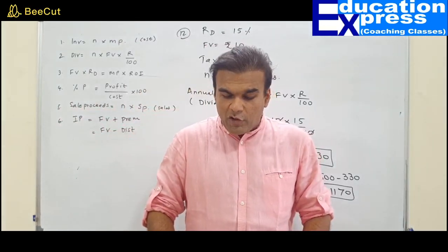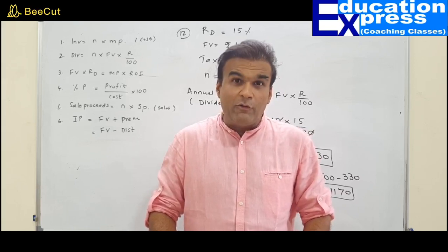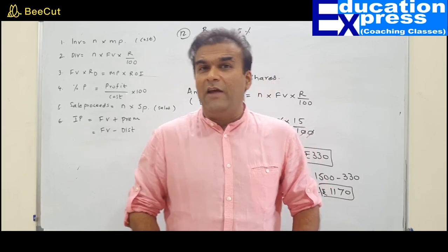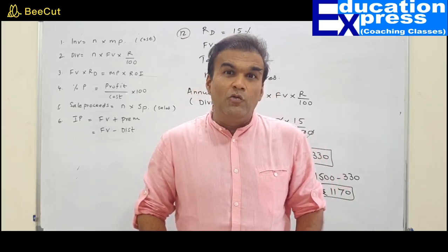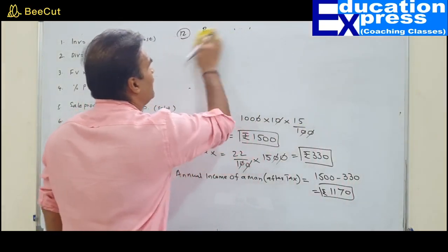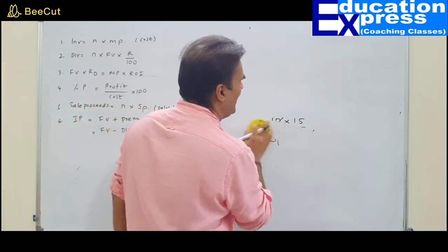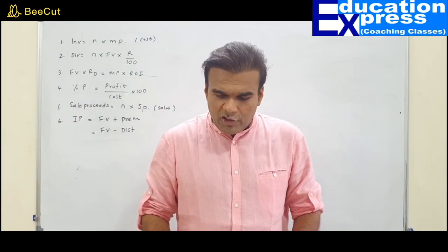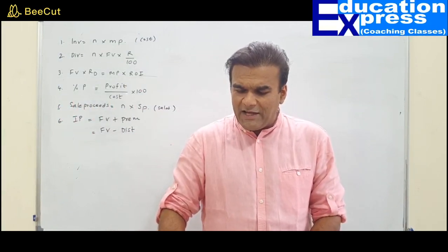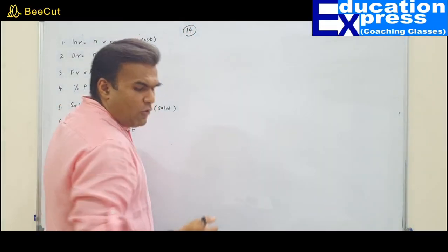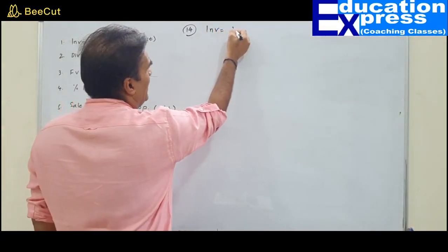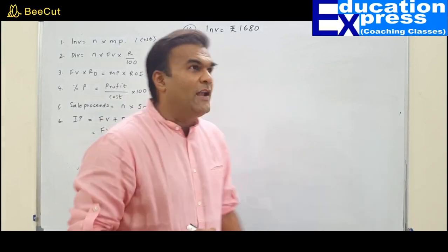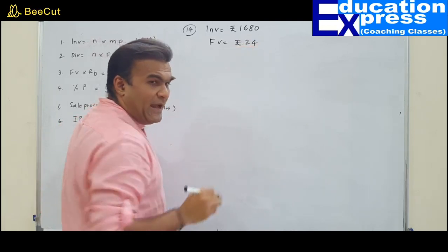Question 14: A man invests Rs. 1,680 in buying shares of nominal value Rs. 24, available at 12% premium. Premium is calculated on face value: 12% of 24 = 2.88. Market price = 24 + 2.88 = Rs. 26.88. Number of shares = investment ÷ market price = 1,680 ÷ 26.88 = 62.5 shares.